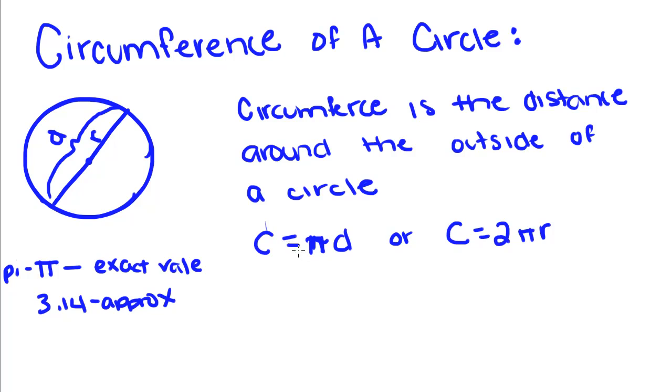Circumference is equal to pi times d or 2 pi r. So d is the diameter, d is this whole line right here.